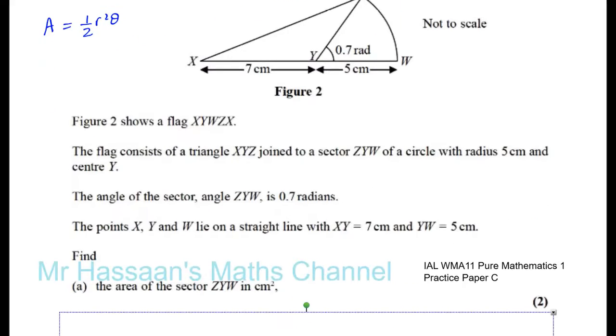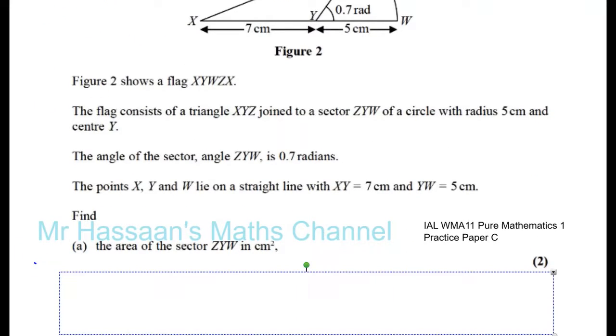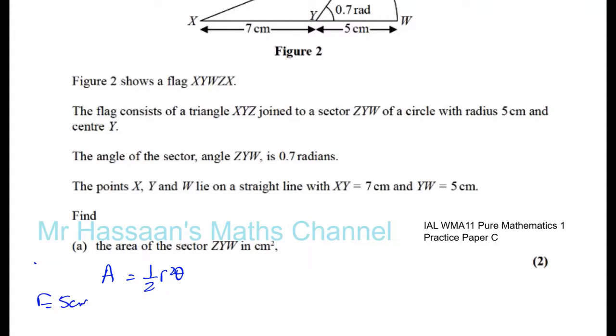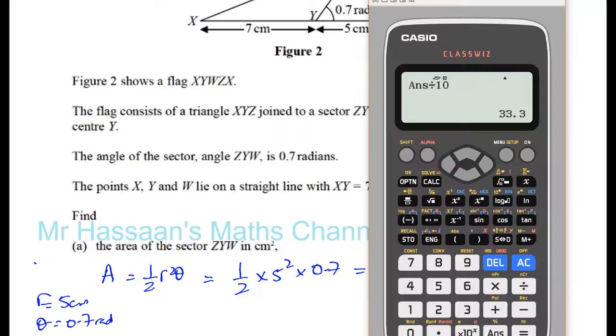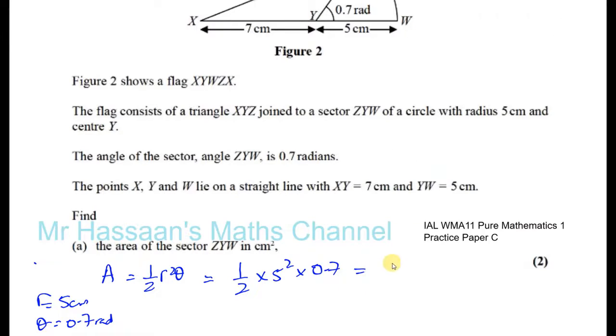We know that the area is ½r²θ when θ is in radians. We know r is 5 centimeters and θ is 0.7 radians, so the area is ½ × 5² × 0.7. That's 0.5 × 25 × 0.7, which gives 35/4, which is 8.75 centimeters squared. There's the answer for part A.